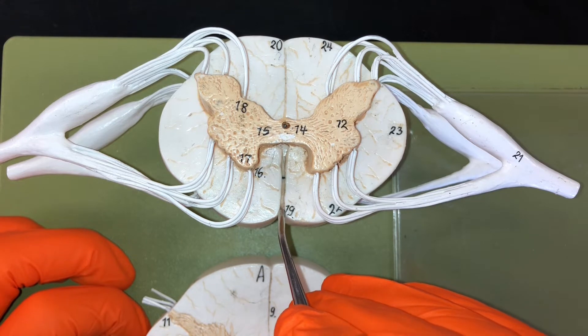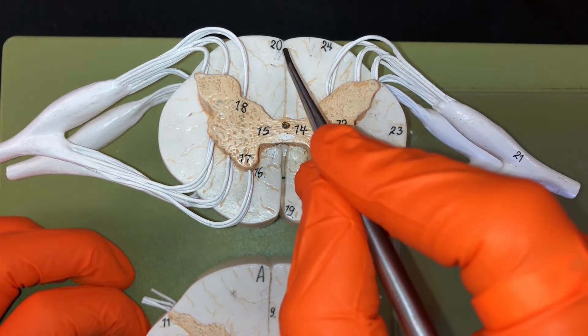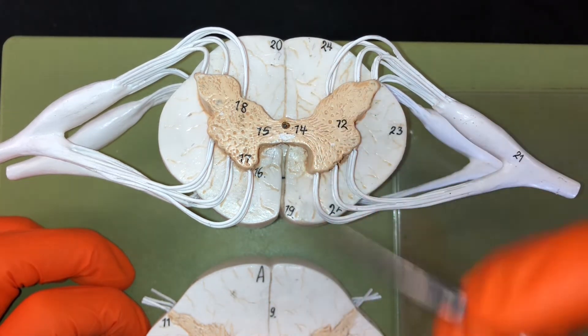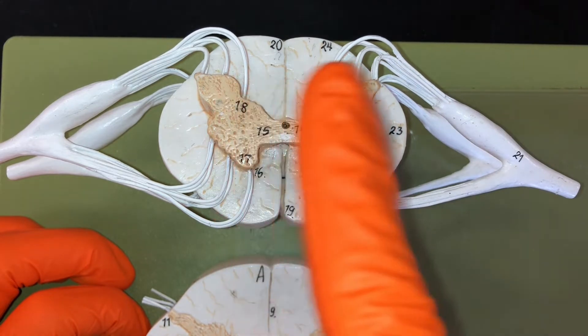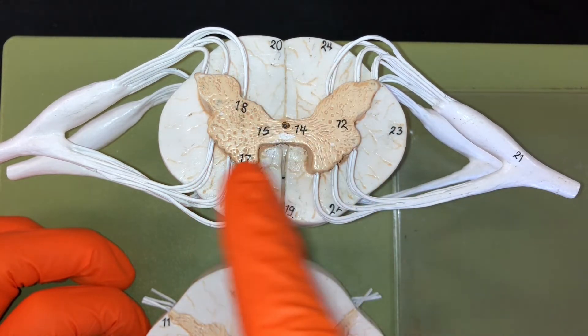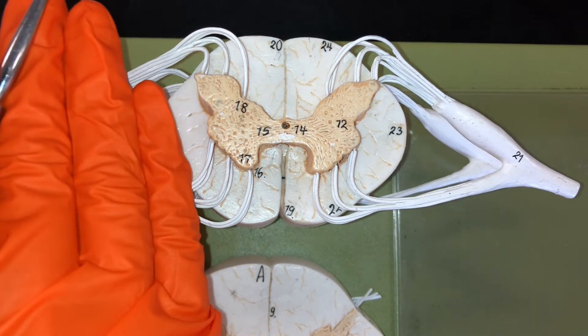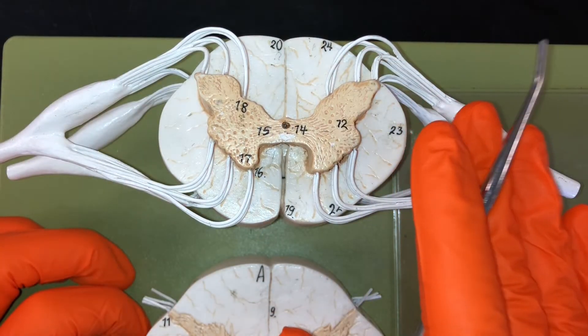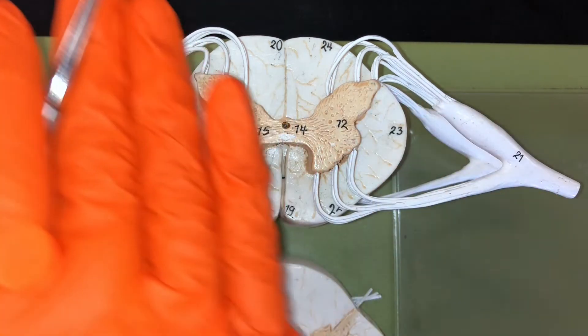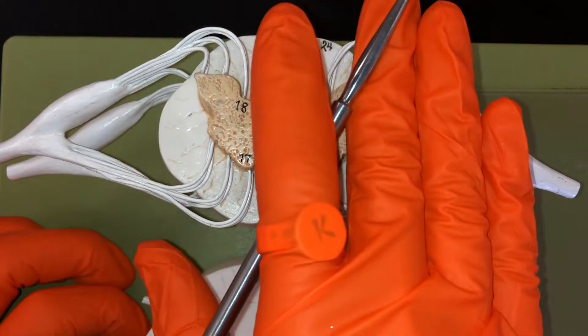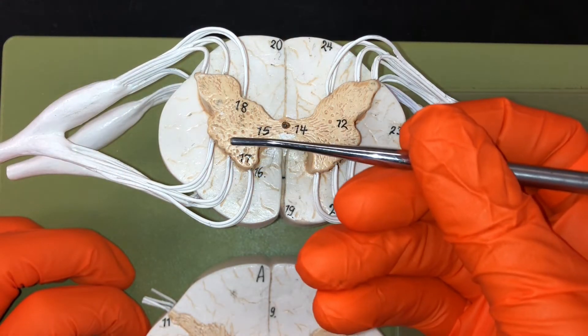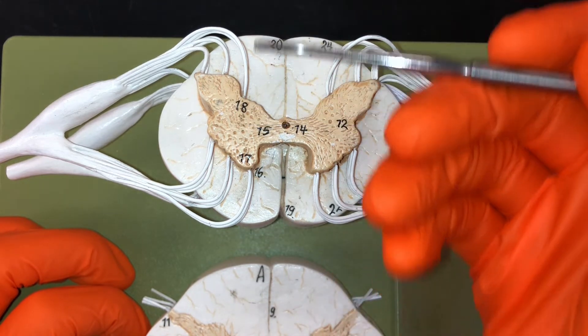If this is anterior and this is posterior, and we have a bird's eye view, meaning this is the top up here, we know we're looking at the right side over here, and the left side over here. So right, left, anterior, posterior.